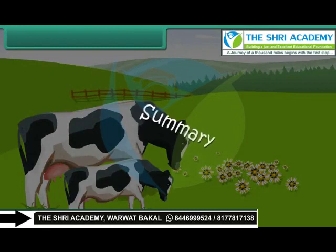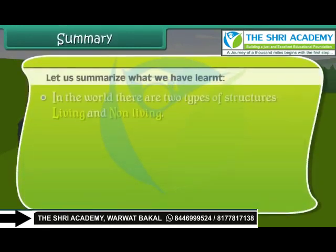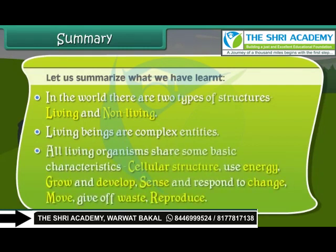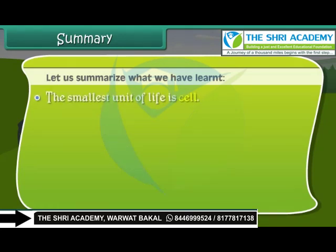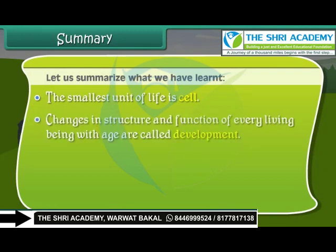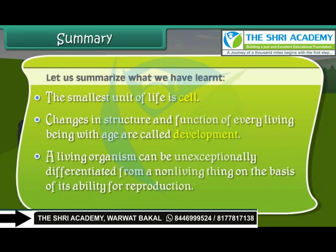Let us summarize what we have learned. In the world there are two types of structures: living and non-living. Living beings are complex entities. All living organisms share basic characteristics: cellular structure, use of energy, growth and development, sense and respond to change, movement, give off waste, and reproduction. The smallest unit of life is the cell. Changes in structure and function of every living being with age are called development. A living organism can be unambiguously differentiated from a non-living thing on the basis of its ability for reproduction.